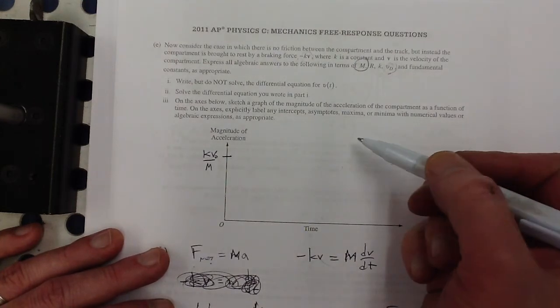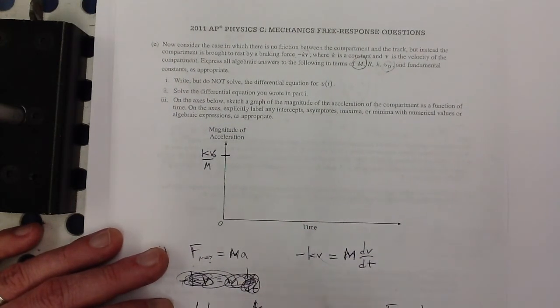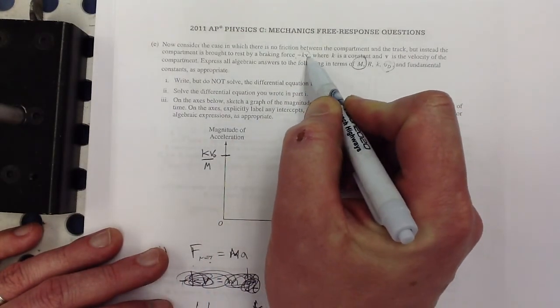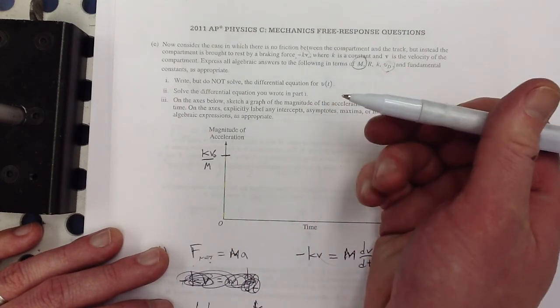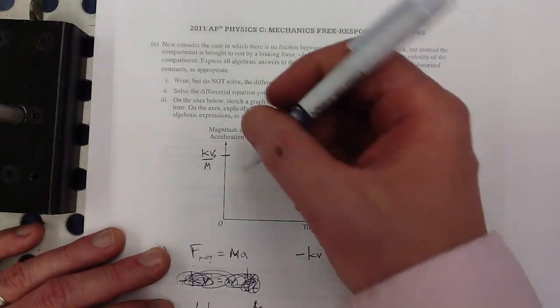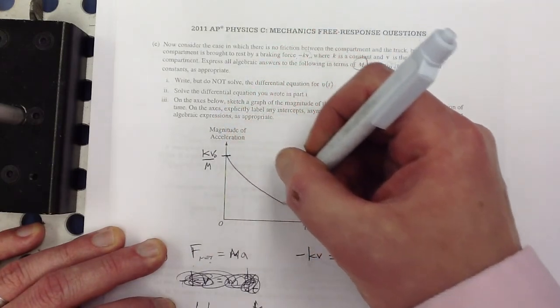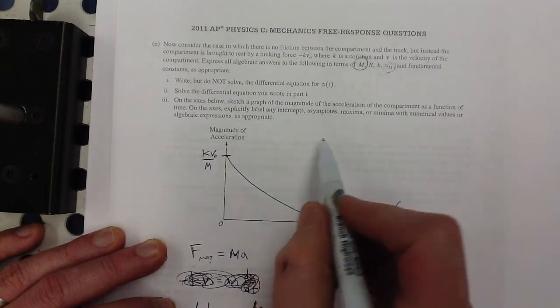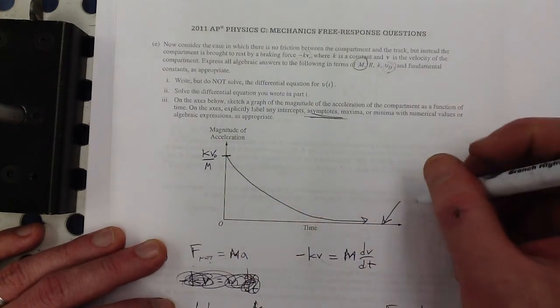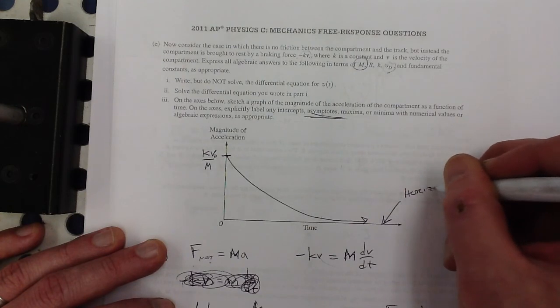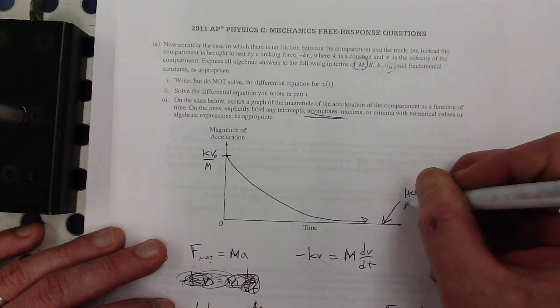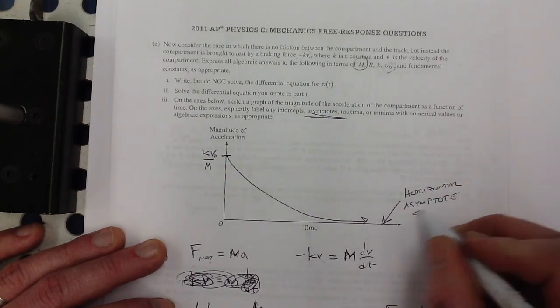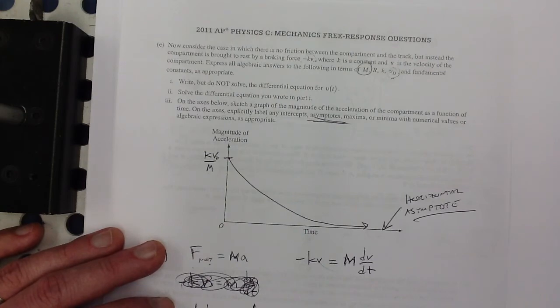Right and the initial velocity is that v sub D. All right and then I think we know what this graph is supposed to look like right that's the acceleration but as it slows down there's going to be less and less of a braking force which is going to make the acceleration get smaller and smaller and asymptotically approach zero. And since they specifically asked for us to label these things I'm going to say this is a horizontal asymptote. And that's it.